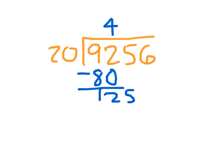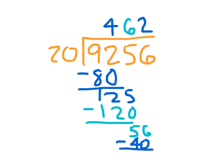125 divided by 20, concentrating on the 2 and the 12, that would be 12 divided by 2. That's 6, because 6 times 20 is 120. 125 minus 120 is 5, and I bring down the 6. 56 divided by 20. Now I'm concentrating on the 5 and the tens place here. 5 tens divided by 2 tens is 2, because 2 times 20 is 40. And 56 minus 40 is 16.